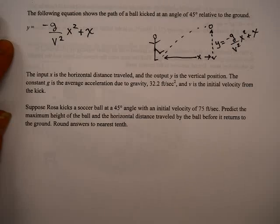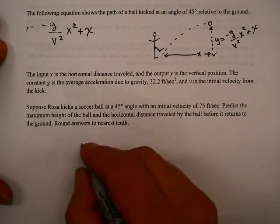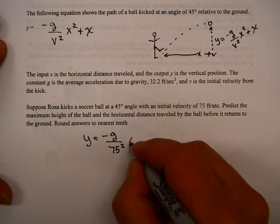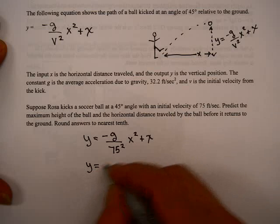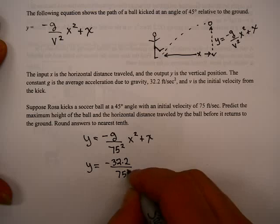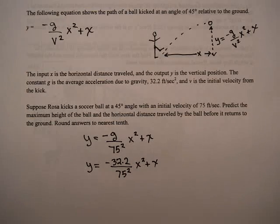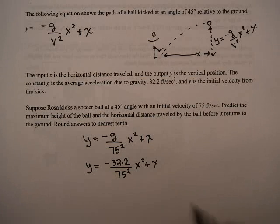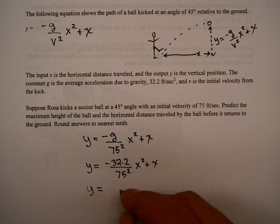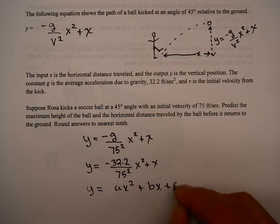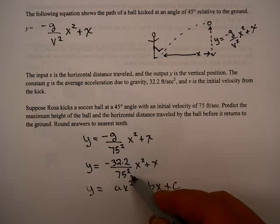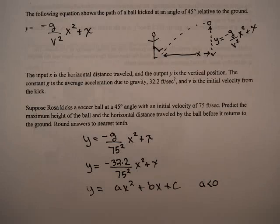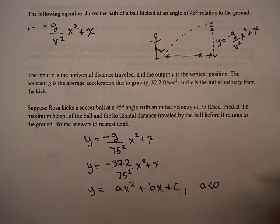Suppose Rosa kicks a soccer ball at a 45 degree angle with an initial velocity of 75 feet per second. So just using this equation, that's y = -g/75² · x² + x. I'll put g in there: y = -32.2/75² · x² + x. Now, I'm going to advise you not to simplify this for the moment. Let's see what the problem is. Predict the maximum height of the ball and the horizontal distance traveled. If you look at this, you'll notice this is a quadratic function, ax² + bx + c, where a equals -32.2/75², b equals 1, and c equals 0. Since a is negative, we know that this parabola points down, so the maximum occurs at the vertex.